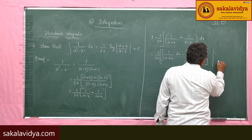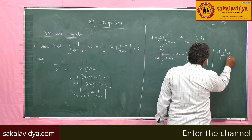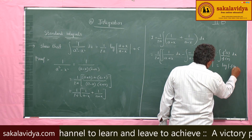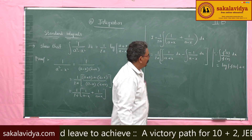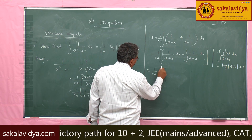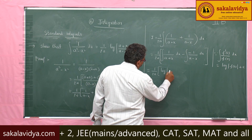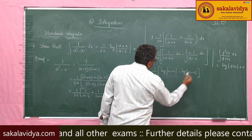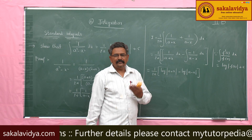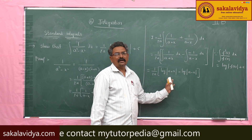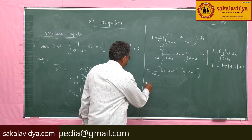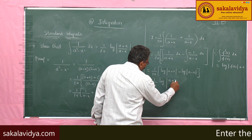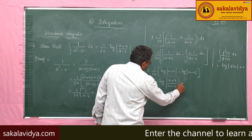Using the formula ∫f'(x)/f(x) dx = log|f(x)| + c, we get (1/2a)[log|a + x| − log|a − x|]. Since log x − log y = log(x/y), this becomes (1/2a)·log|(a + x)/(a − x)| + c.